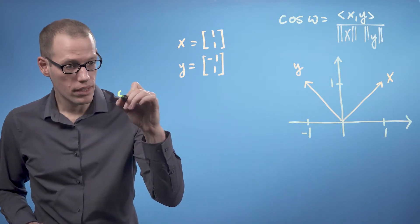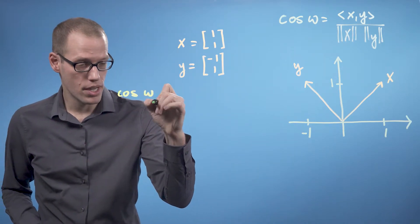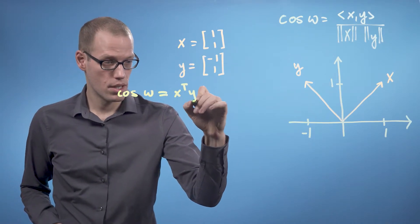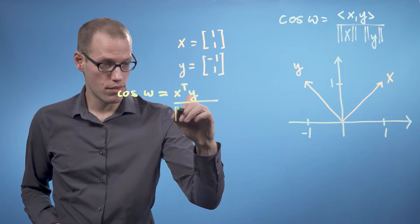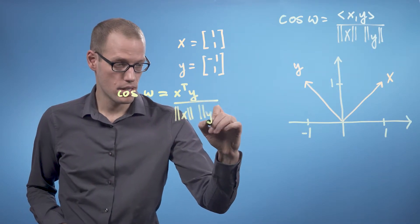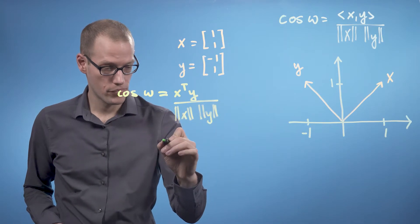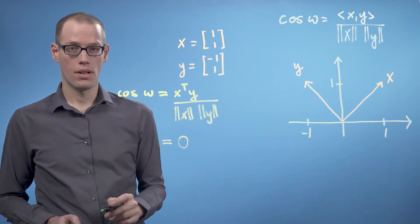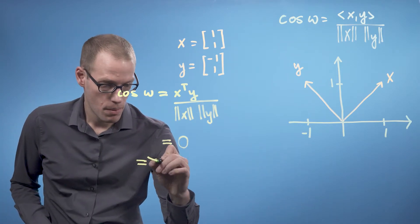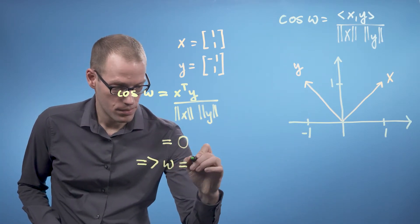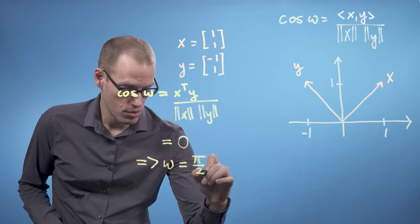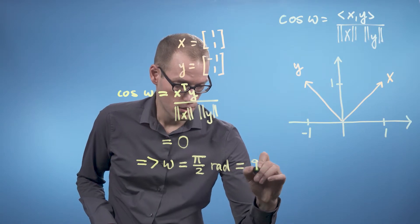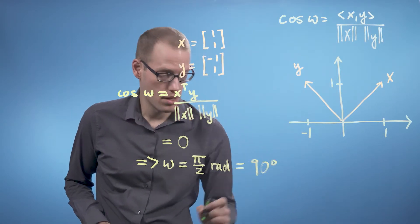And we see that the cosine of this angle between x and y is with the dot product x transpose times y divided by the norm of x times the norm of y. And this evaluates to 0. This means that omega is pi over 2 in radians, or if we want to say this in degrees, we have 90 degrees.